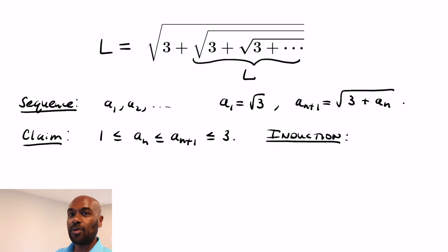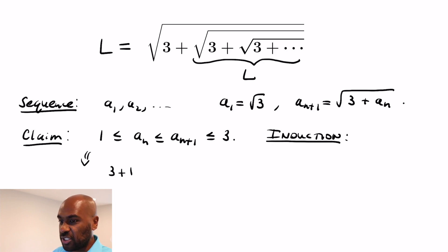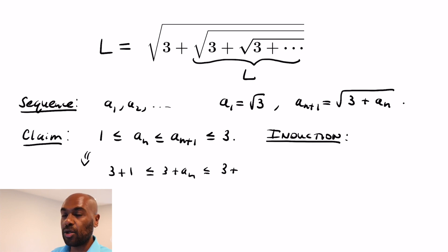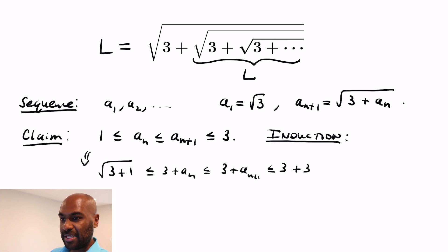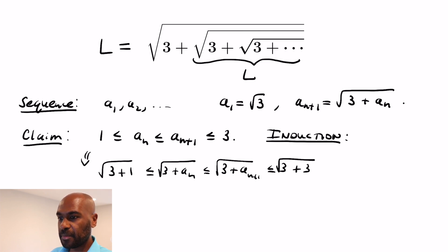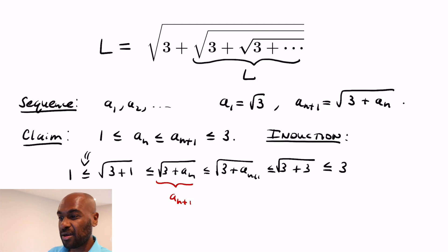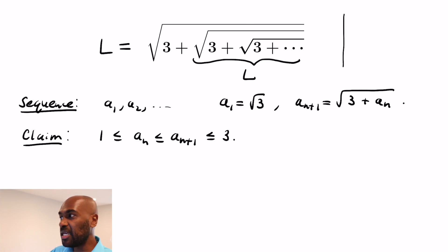For the inductive step, suppose 1 ≤ a_m ≤ a_{m+1} ≤ 3. We add 3 to each expression, maintaining the inequalities, then take square roots. The left-hand side becomes √4 ≥ 1, and the right-hand side becomes √6 ≤ 3. The middle terms are exactly a_{m+1} and a_{m+2}. So we get the same inequality for the next indices, completing the induction.